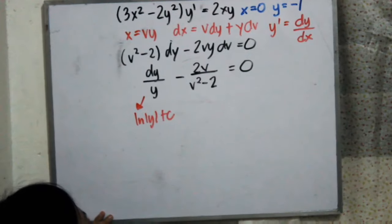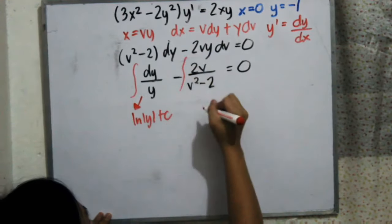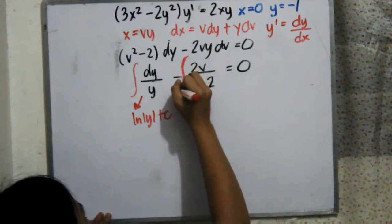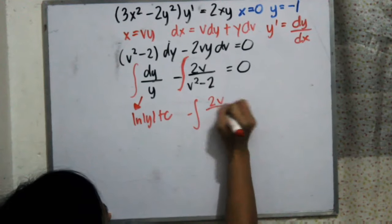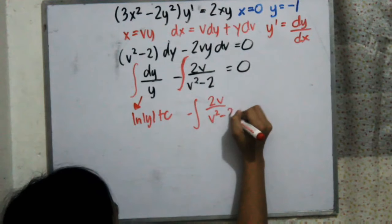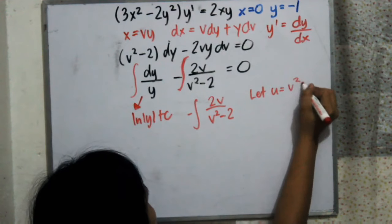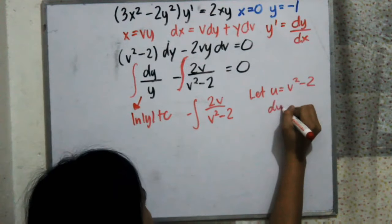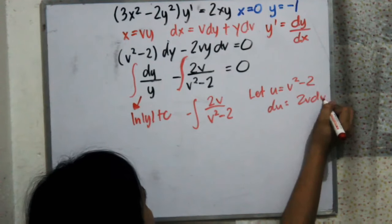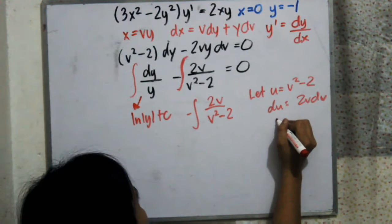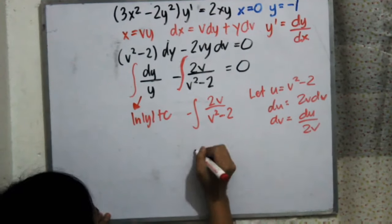We know the integral of dy over y equals ln|y| plus a constant. For the second integral, we use substitution: let u equal v squared minus 2, so du equals 2v dv, which gives us du over 2v equals dv.